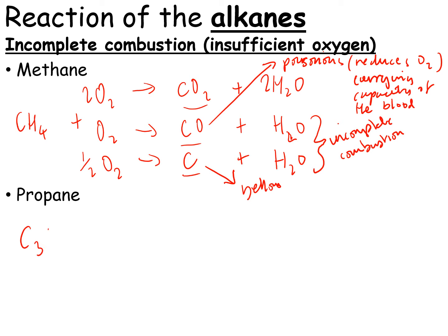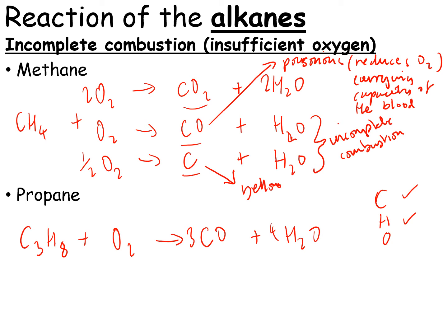Now let's do an example for propane. If you react it with oxygen and the question asks you to write the equation for the combustion of propane forming carbon monoxide, you write the equation out and then balance it. As we said in the last video, we always balance the carbons first, then the hydrogens, then the oxygens. That gives us three CO and three and a half O₂. Now if the question asked you to write it with carbon forming instead of carbon monoxide, you do exactly the same and balance it using C first, then H, then O — you just end up with one less oxygen, so two O₂.